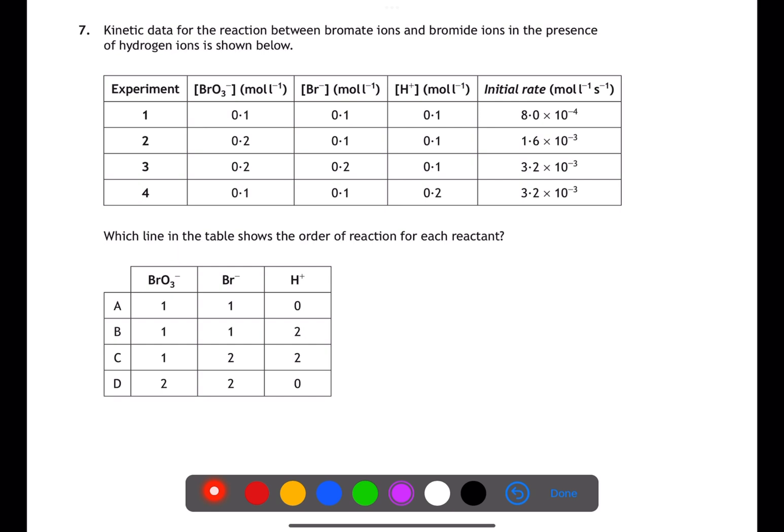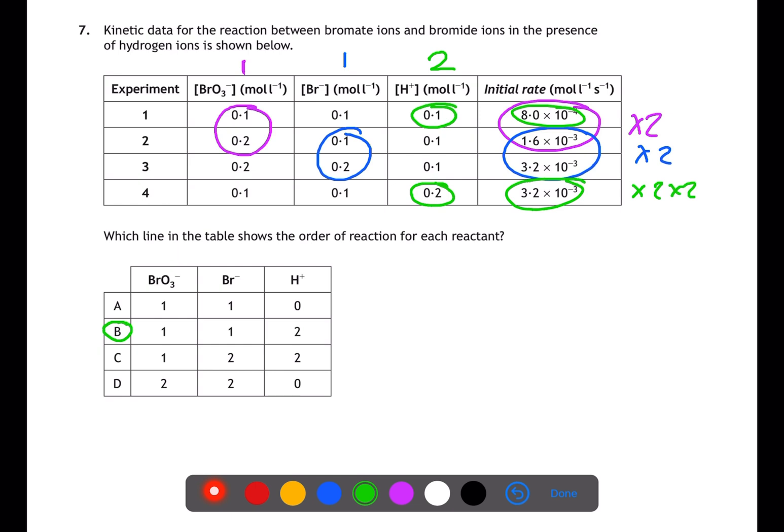For question 7 we need to take each of the reactants in turn and compare what happens when we double their concentration. If we look at BrO3- we'll compare experiments 1 and 2 and we can see that the rate will double. This means we have order 1. For Br- we're going to compare experiments 2 and 3 and the rate also doubles. For H+, we're going to compare experiment 1 and experiment 4. The rate doubles twice. This means we have order 2 for the H+ ions. Matching up our answers we can see that this is answer B.